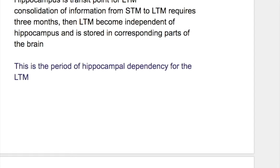What is system consolidation? The hippocampus is a transient point for long-term memory. Consolidation of information from short-term to long-term memory requires three months. Then long-term memory becomes independent of the hippocampus and is stored in the corresponding parts of the brain.